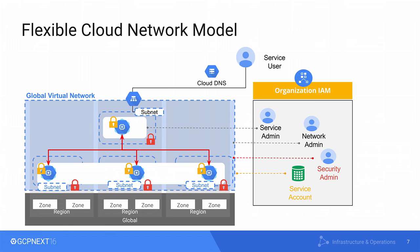Then the network admin comes along, creates Cloud DNS, and starts serving through load balancing. And if you have on-premises data centers you'd like to connect, in one of the sub-networks you bring up Cloud VPN and Cloud Router functionality to connect to your on-premises data centers securely through IPsec tunnels. These are all the building blocks — you can also visualize Cloud Interconnect fitting into this model. This is how we architect and design the networking model at global scale.